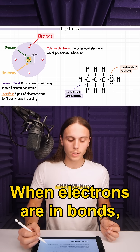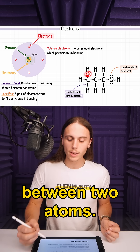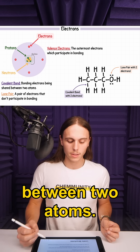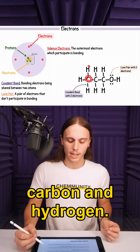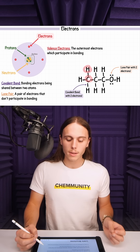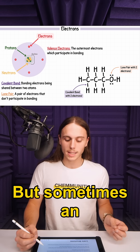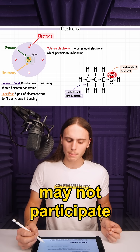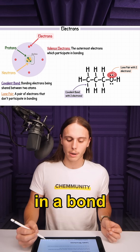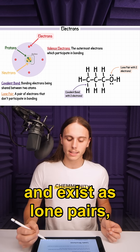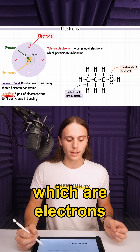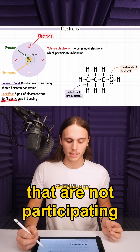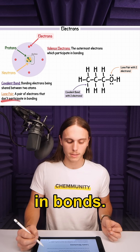When electrons are in bonds, they are more isolated between two atoms — for example, between carbon and hydrogen. But sometimes an atom's valence electrons may not participate in a bond and can exist as lone pairs, which are electrons that are not participating in bonds.